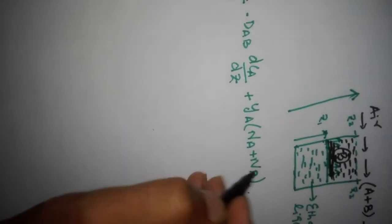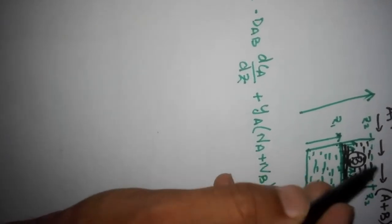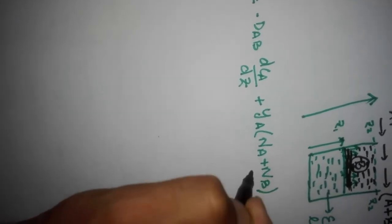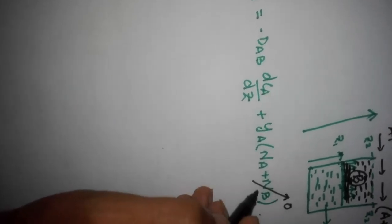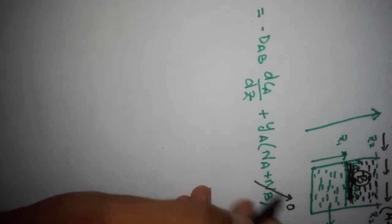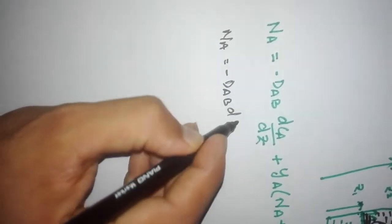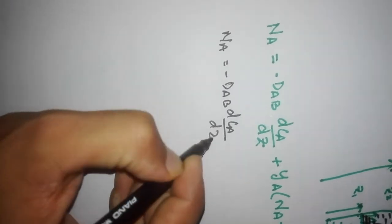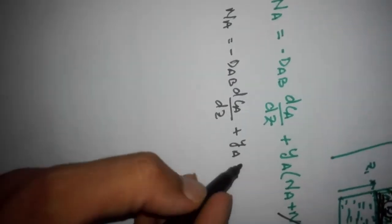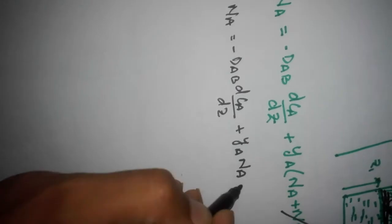Since B is stationary and not moving, there is no molar flux of B, so NB = 0. The relation simplifies to: NA = -DAB (dCA/dZ) + YA · NA.